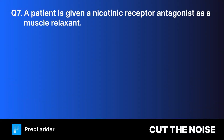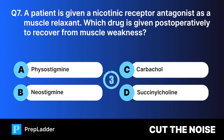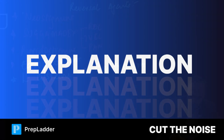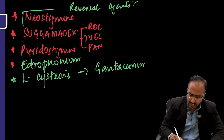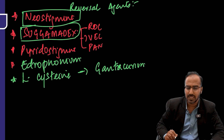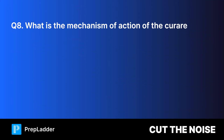Question number seven: a patient is given a nicotinic receptor antagonist as a muscle relaxant. Which drug is given postoperatively to recover from muscle weakness? The correct answer is neostigmine. The most commonly used reversal agents are neostigmine and sugammadex.